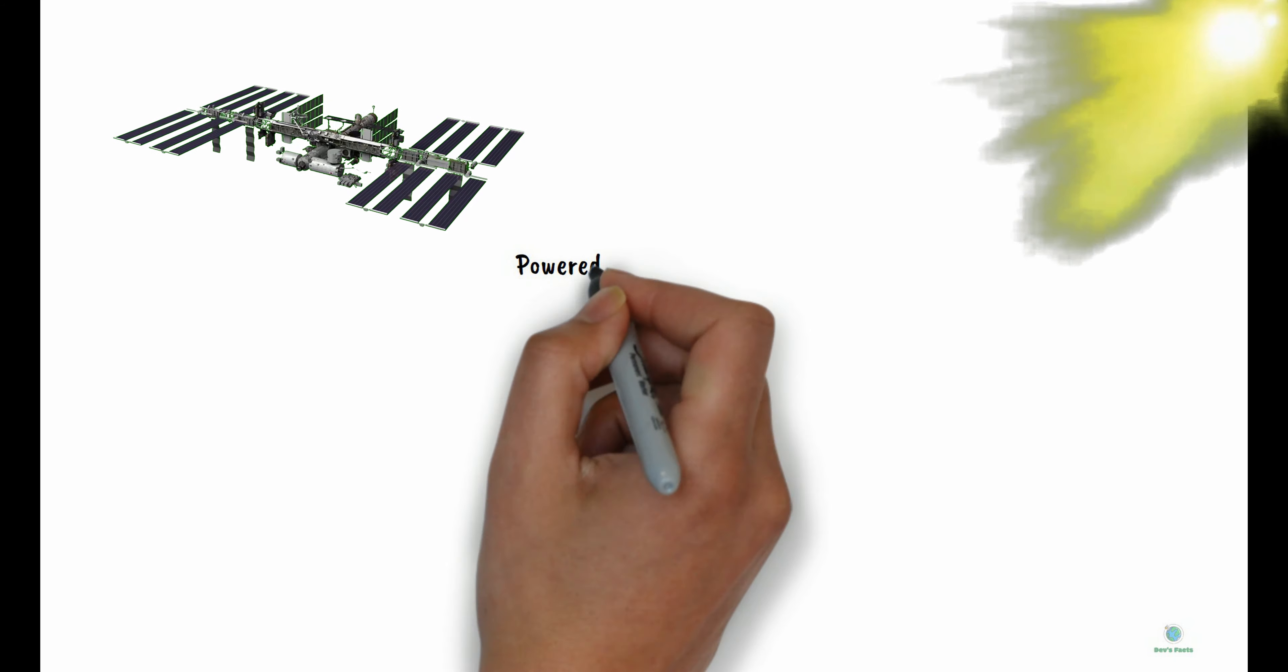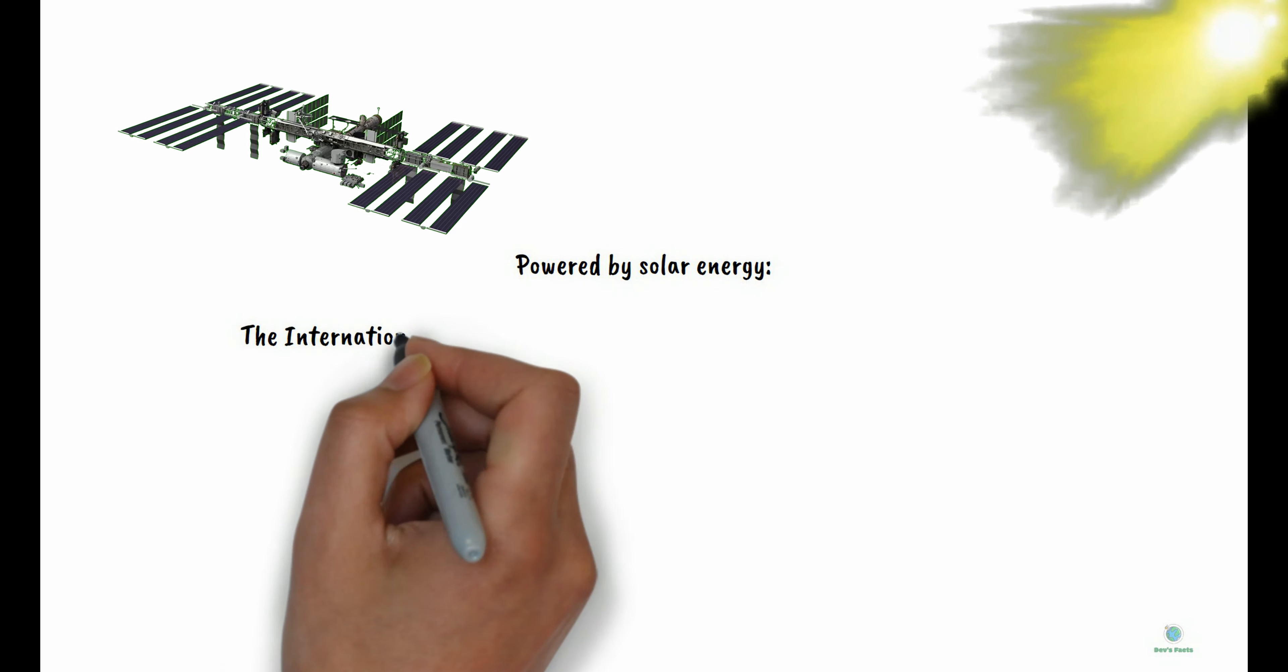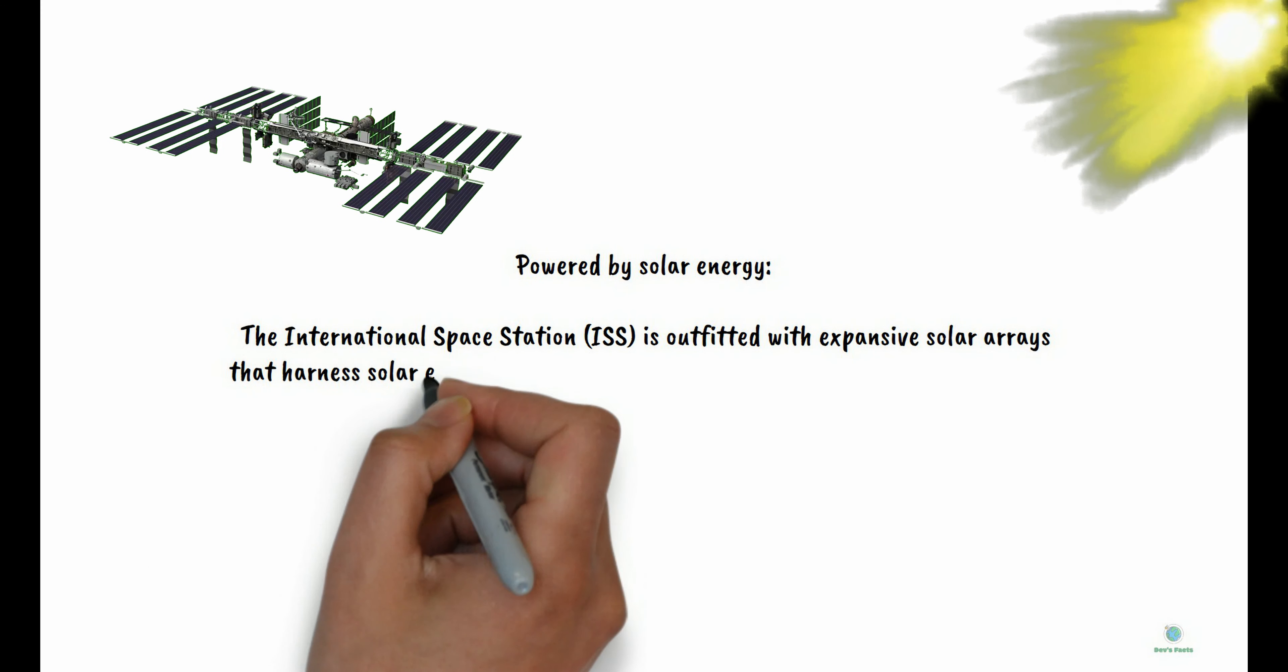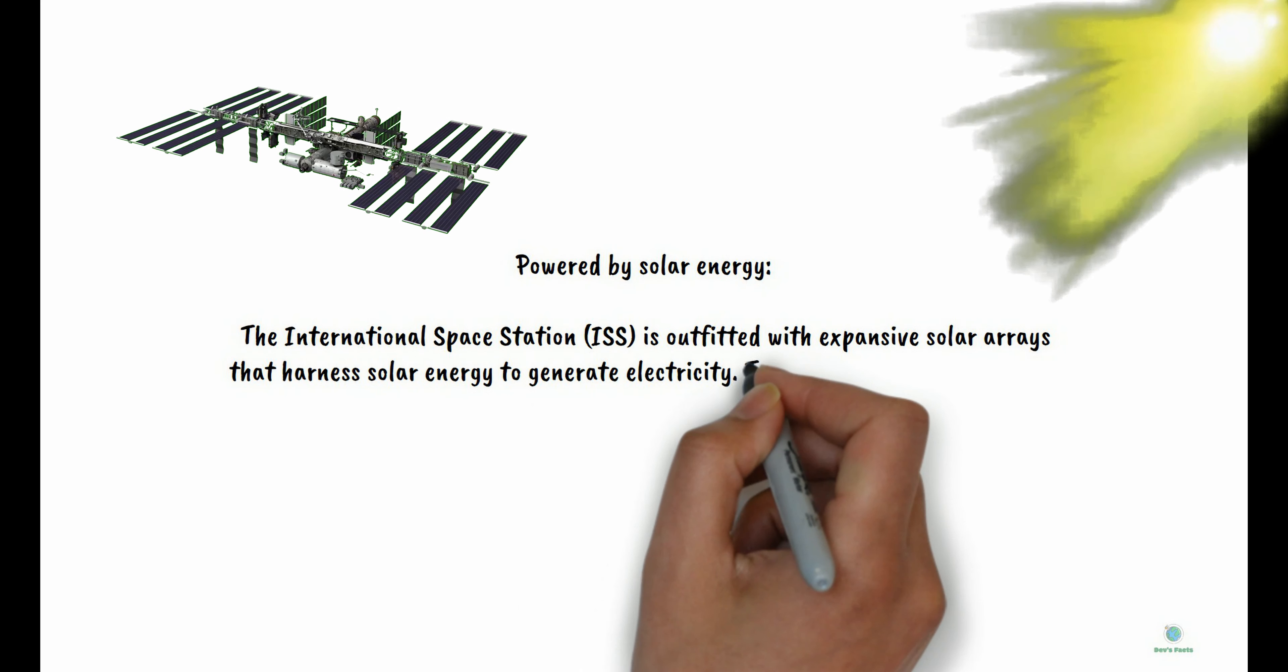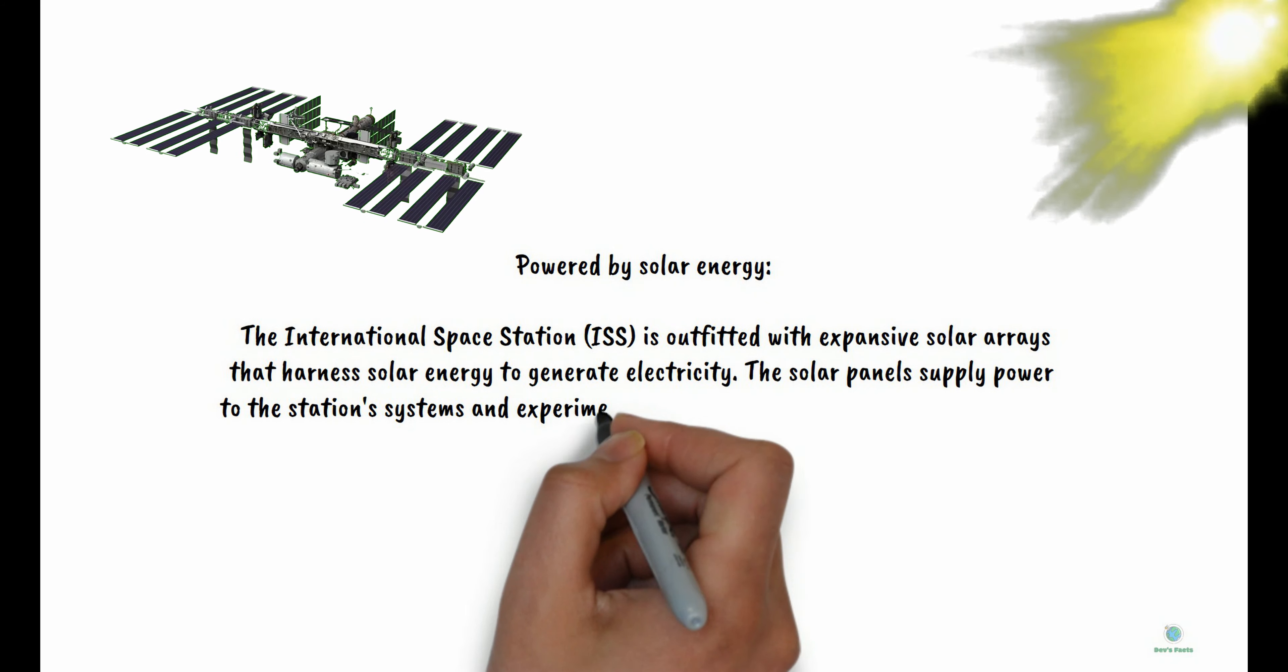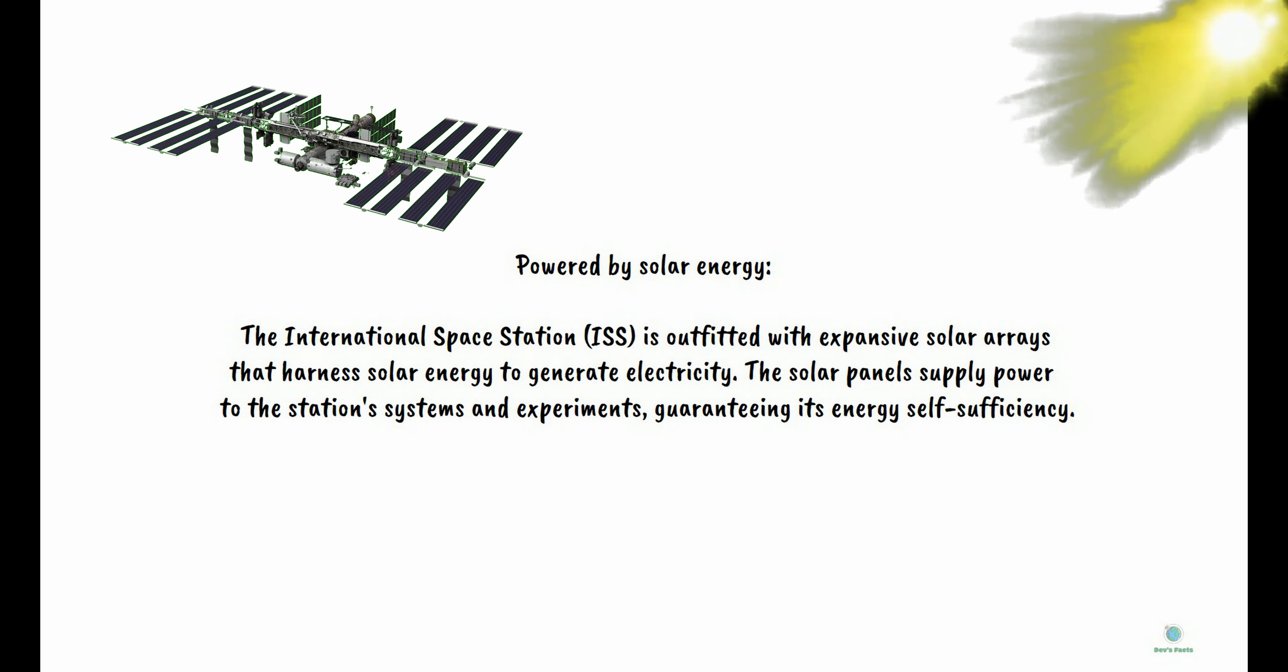Powered by Solar Energy: The International Space Station is outfitted with expansive solar arrays that harness solar energy to generate electricity. The solar panels supply power to the station's systems and experiments, guaranteeing its energy self-sufficiency.